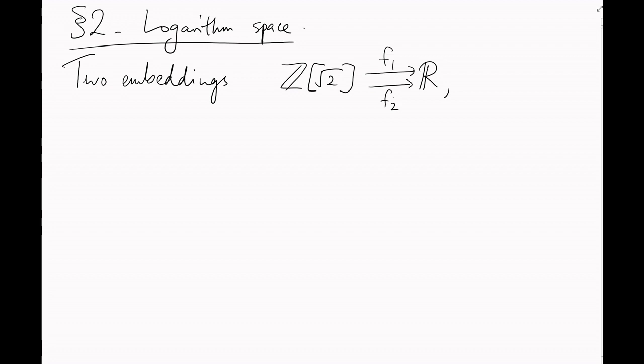Section 2, Logarithm space. Remember our picture of z-adjoin root 2 from last video? We had two embeddings, f1 and f2, of z-adjoin root 2 into the real line.